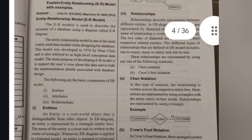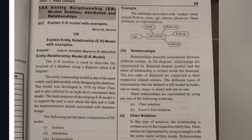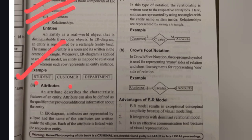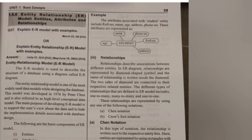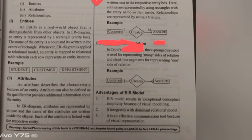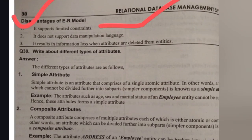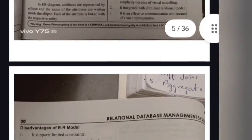The next important question is the ER Model — Entity Relationship Model. The structure of a database using a diagram is called an Entity Relationship Model. It has three components: entities (e.g., student, customer, department), attributes (e.g., student name, student ID, hall ticket number, phone number, age, course), and relationships (linking one data to another, e.g., customer creates accounts). Advantages: ER model results in conceptual visualization; it is an effective communication tool using diagrams instead of text. Disadvantages: limited constraints, does not support DML commands, and results in information loss.